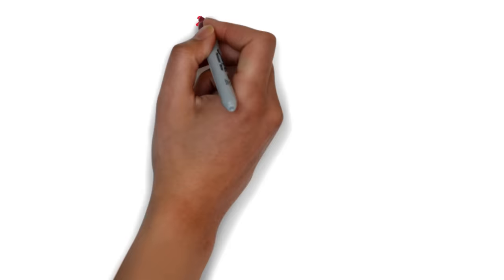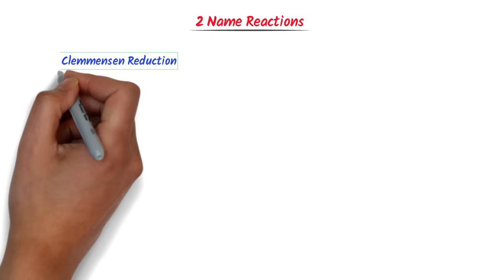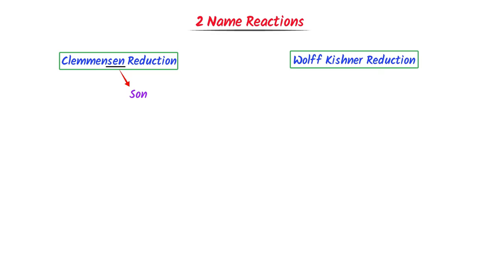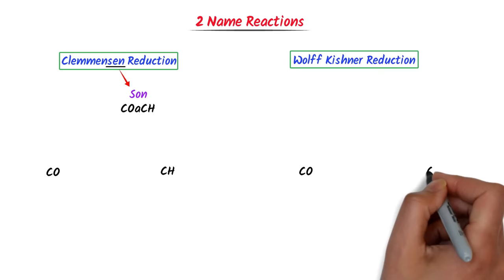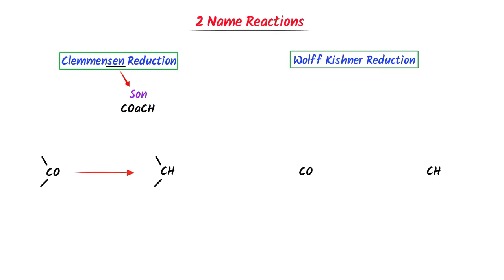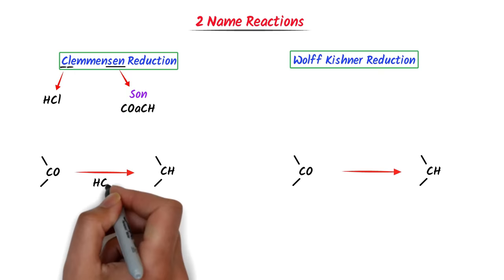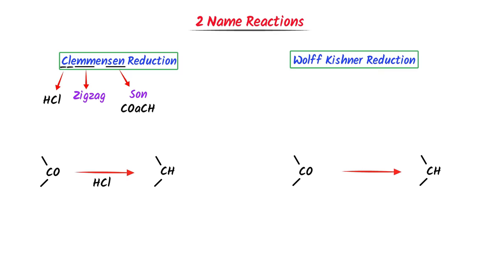Now let me teach you Clemmensen reduction and Wolff-Kishner reduction. In 'Clemmensen,' there is the word 'sen.' Every 'sen' needs a coach — CO (reactant) becomes CH (product). So CO is the reactant and CH2 is the product. CL in 'Clemmensen' reminds me of HCl. The MM reminds me of a zigzag line where Z stands for zinc and G stands for Hg (mercury). Written together: Zn-Hg plus HCl. This is the complete Clemmensen reduction reaction.